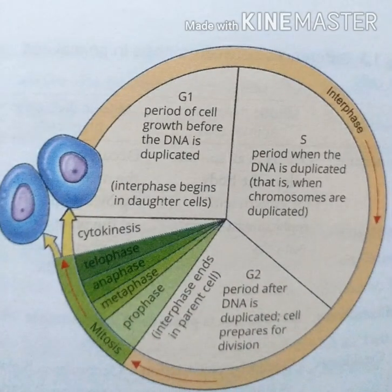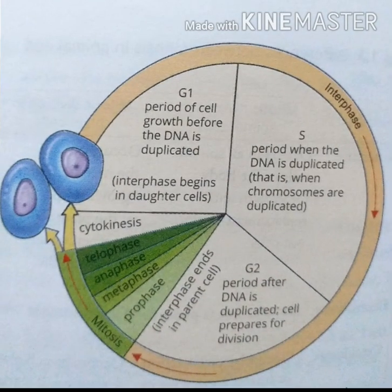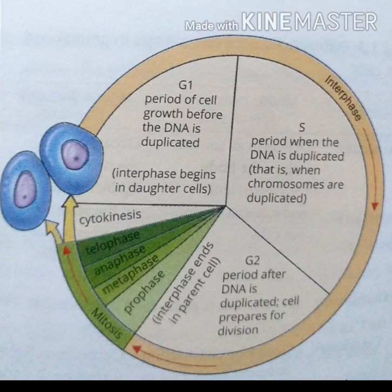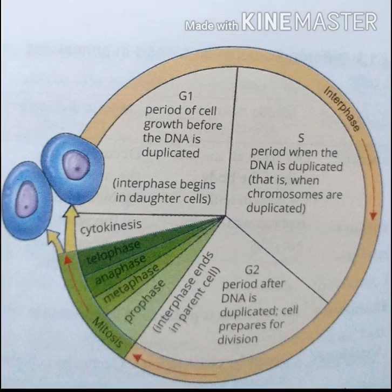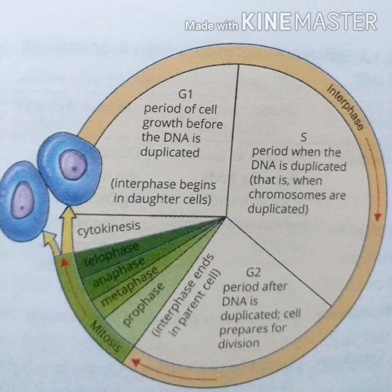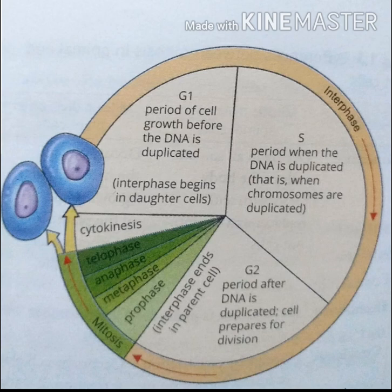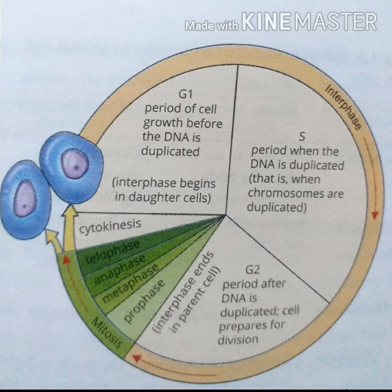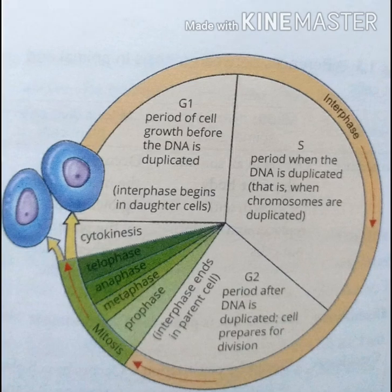Welcome dear students. As I have provided you notes regarding the cell cycle and cell division, today I am providing details regarding the cell cycle — when we move toward it, it means divide, grow, and re-divide. The new cells at the end of mitosis are relatively small with a full-size nucleus but relatively little cytoplasm.